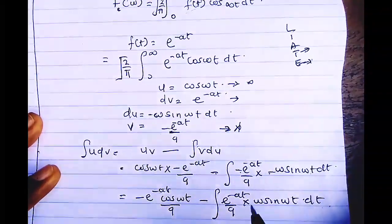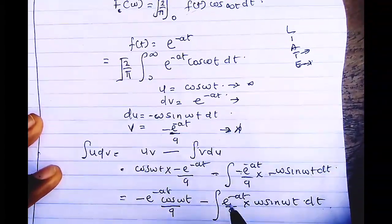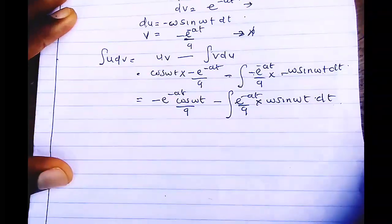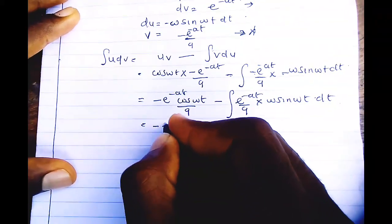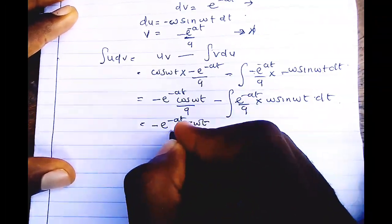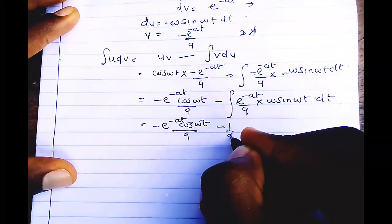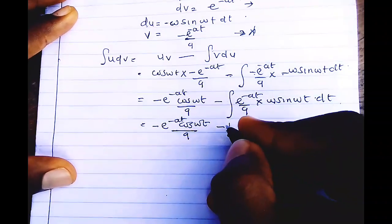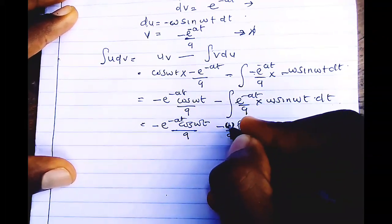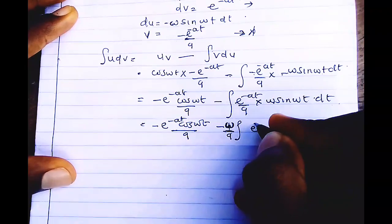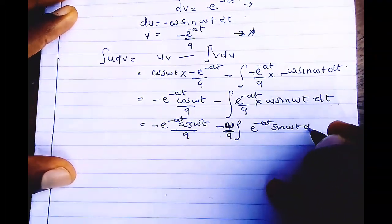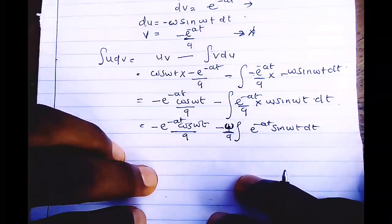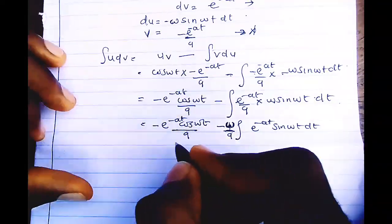This expression is still integrable. We have the constant 1/a, so we take it outside the integral sign. We are left with: -e^(-at) cos(ωt)/a minus (w/a) times the integral of e^(-at) sin(ωt) dt. We need to integrate this remaining integral once more.